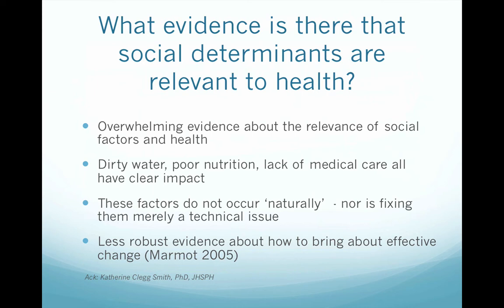There is overwhelming evidence that social determinants are relevant to health — a lot of literature on dirty water, nutrition, sanitation, and lack of medical care having an impact. These factors do not occur naturally, nor is fixing them just a technical issue. What we don't know as much about is how to bring about effective change. For example, malnutrition rates in under-5s in India are very high — much higher than in much poorer countries — and recent research shows poor sanitation is strongly related to this. The question is how do we actually change these unequal structures.